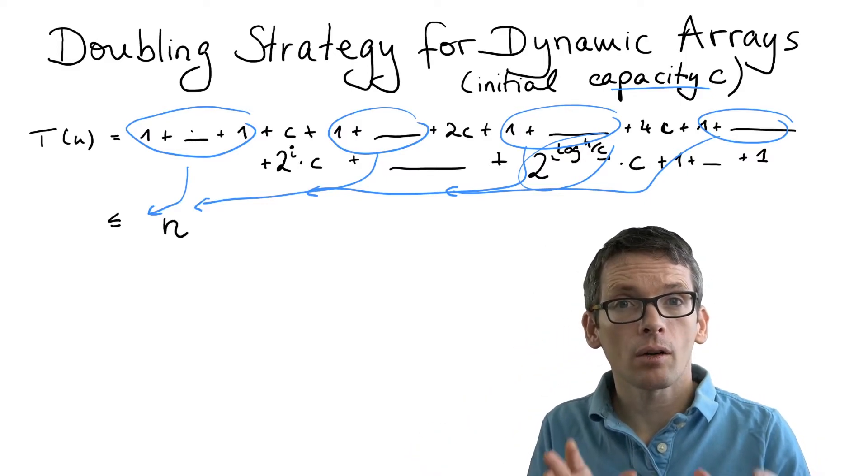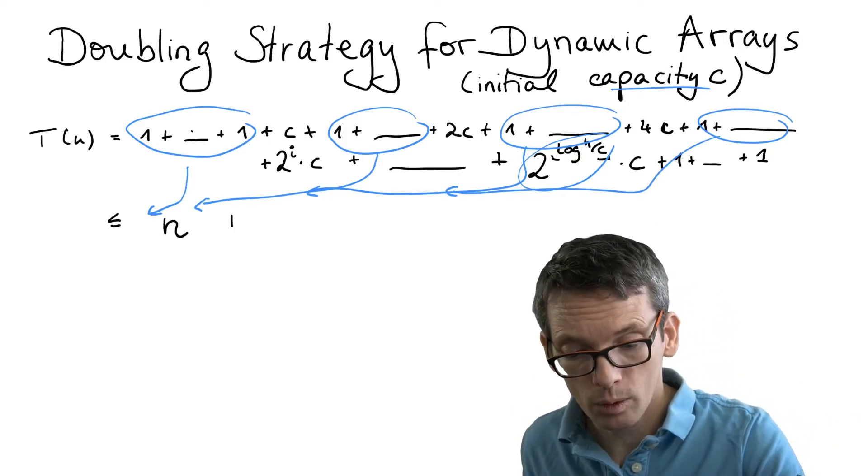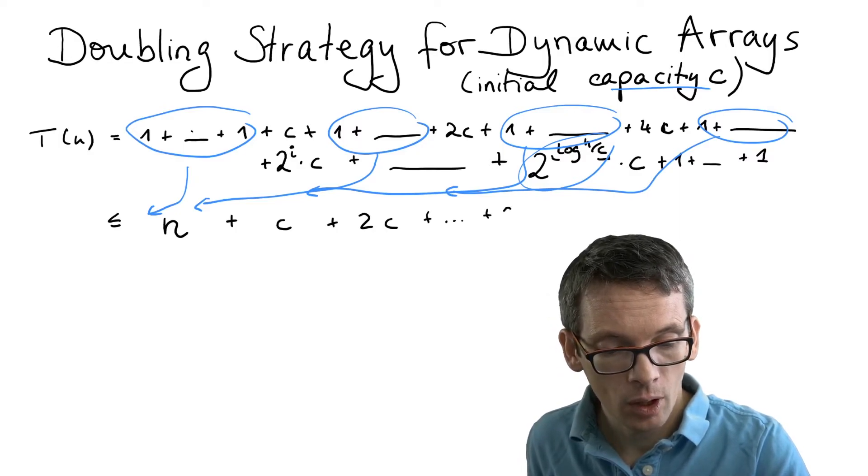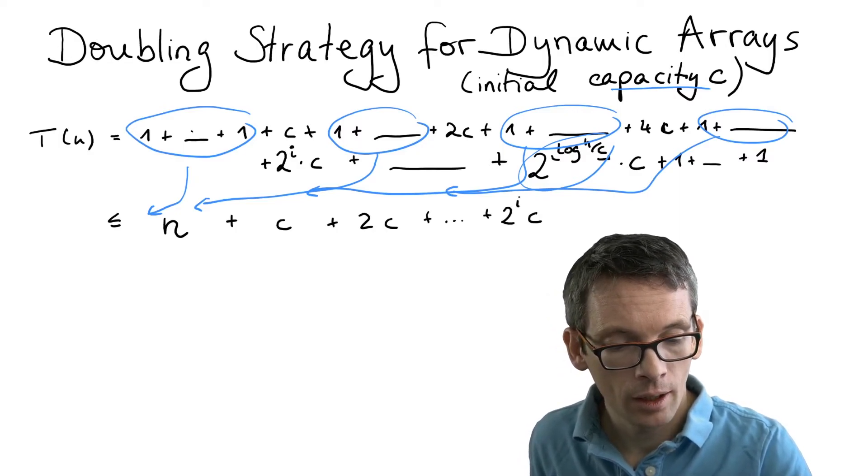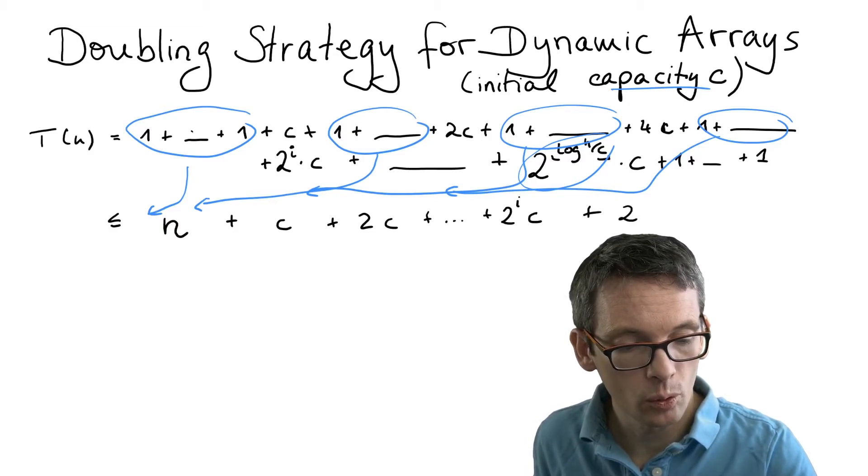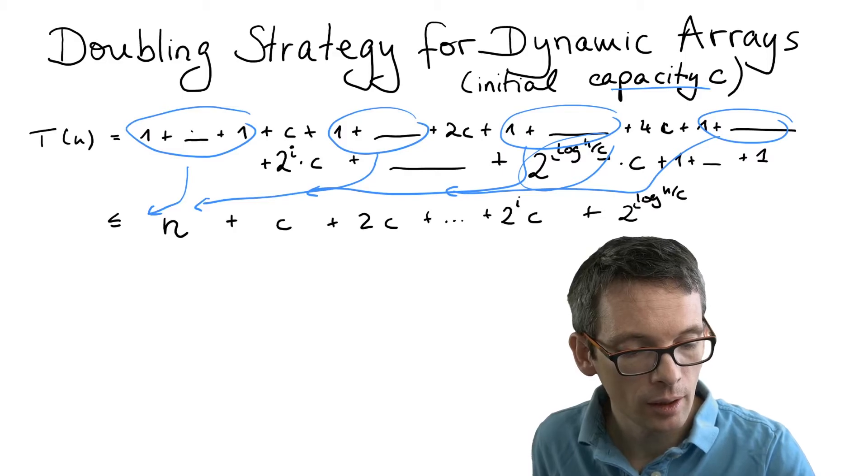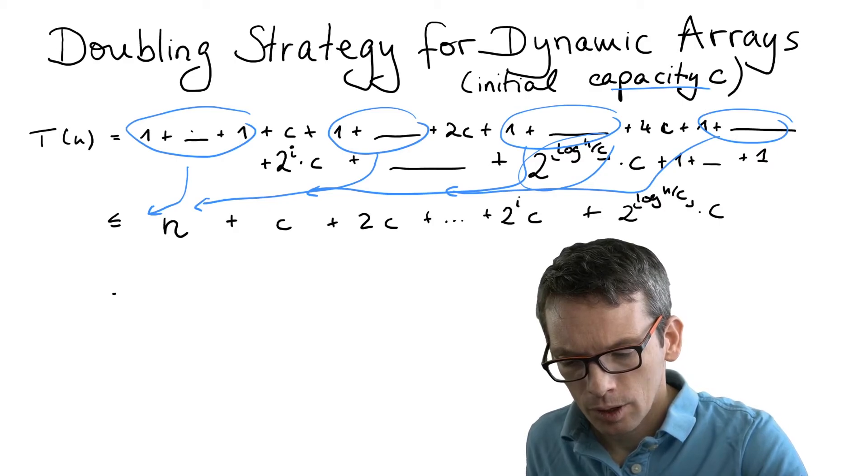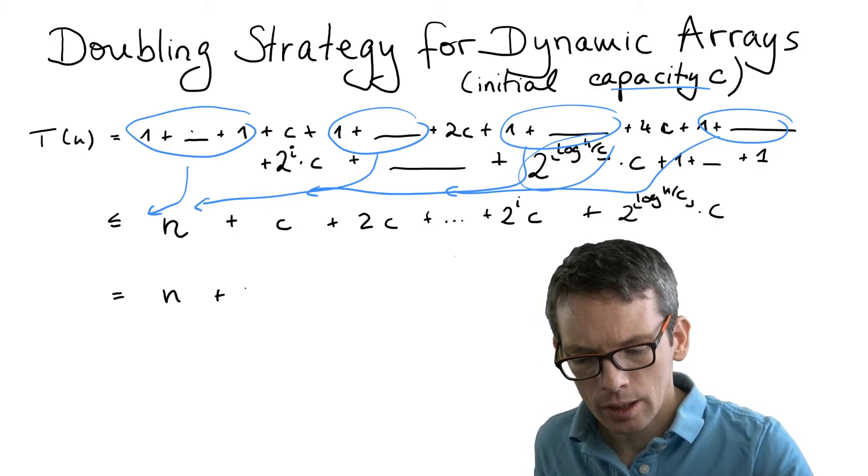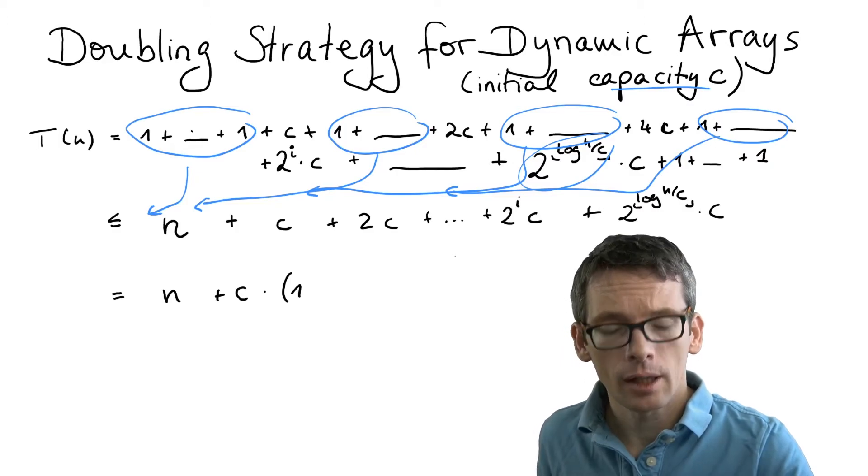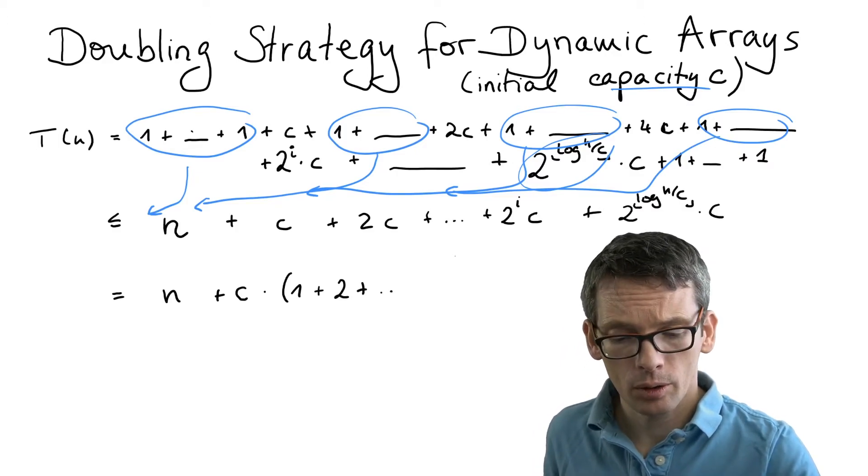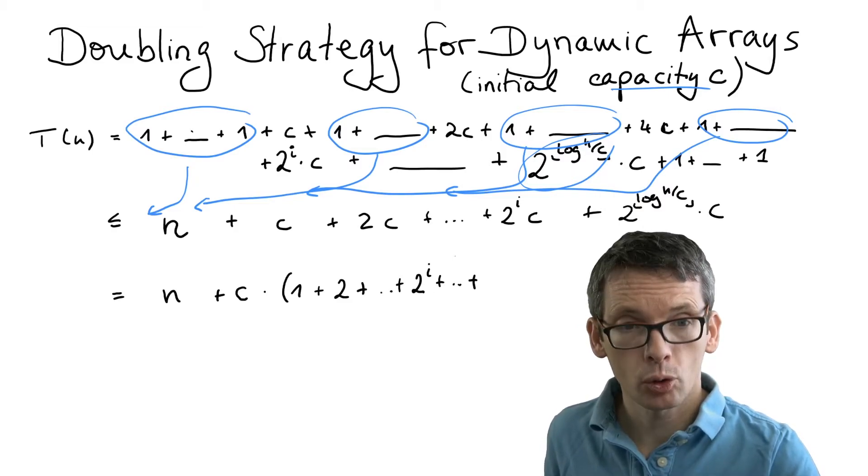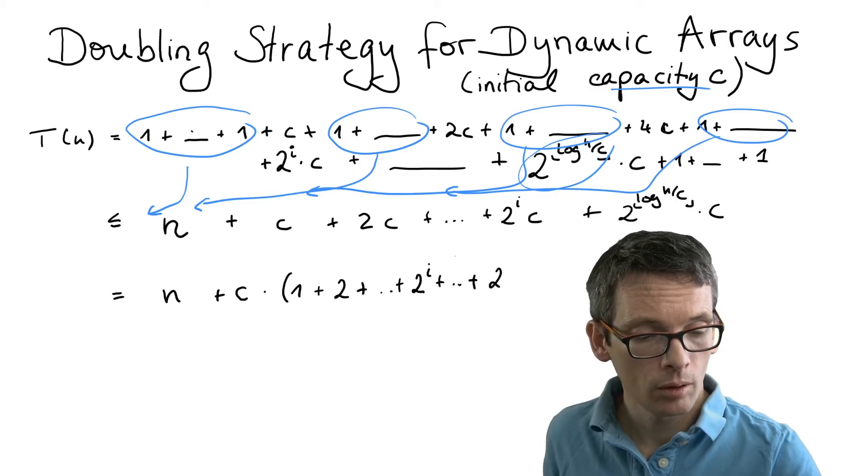Now I just need to take care of the c, 2c, and so on terms. So let me write them down once more. We have c plus 2c plus and so on. In general 2 to the i times c and this goes up to 2 to the log n divided by c. Let's take the c outside of the sum. So this is n plus c times 1, c times 2 and so on. In general these terms are 2 to the i terms and they go up to 2 to the log n divided by c.